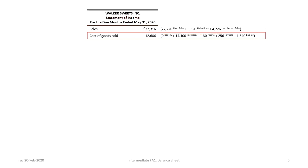Next we include the cost of goods sold totaling $12,686, comprised of $14,400 in purchases less a rebate of $130, plus outstanding accounts payable. Thanks to accrual accounting, even though we haven't paid it yet we have to record it, minus our ending inventory which would have been counted. Because WSI began operations in 2015, the beginning balance in inventory is zero.